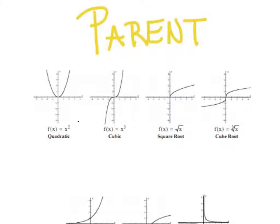The first one is called a quadratic. You'll notice that's our x squared term — y equals x squared. This is a positive x squared, and its main point that we're going to be concerned about is sitting right at the origin, and I will label that point zero, zero. If it said negative x squared, that would flip my graph upside down, still focusing on that point zero, zero.